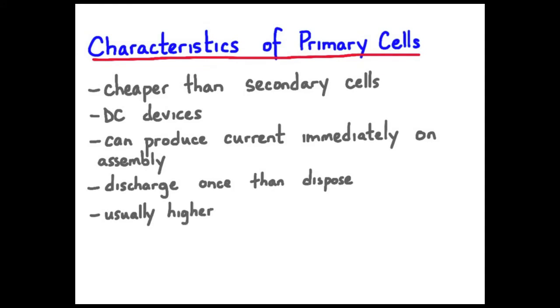They typically have a higher energy density than secondary cells and energy density is a measure of the amount of stored chemical potential energy in the battery per unit volume.